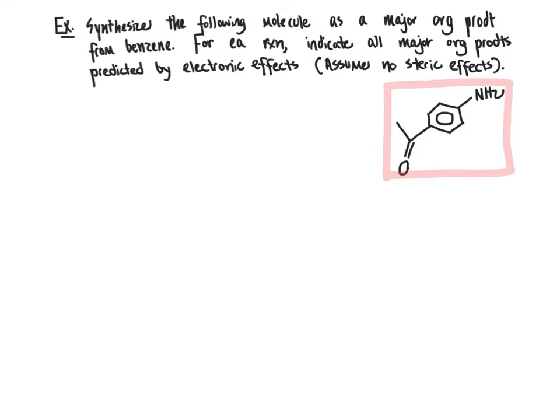We have our example problem where we are tasked with synthesizing the molecule highlighted in pink as the major organic product, using benzene as our starting material. For each reaction we propose, we are required to indicate all of the major organic products predicted by electronic effects, and we can assume that there are no steric effects. So how do we go about synthesizing this as our major organic product? We need to think about how to create each functional group and also how to get the correct regioselectivity — in other words, how to get the para product as the preferred product.